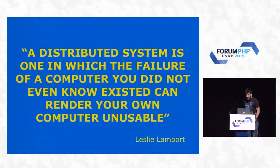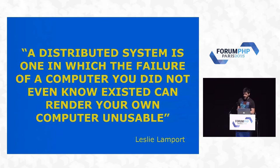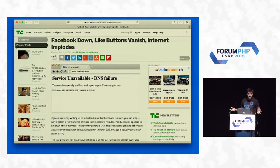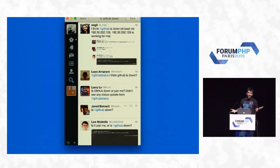The definition of distributed systems is one in which the failure of a computer you did not even know existed can render your own computer unusable. That's the definition from Leslie Lamport, the pioneer on the field. Basically, this is when on the internet we say Facebook is down and the whole internet is down, or GitHub is down and we can't work anymore, or last night Slack was down and nobody could work either.